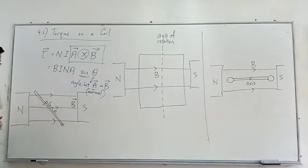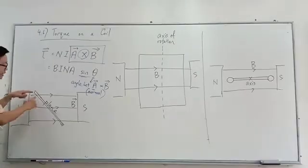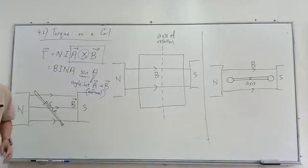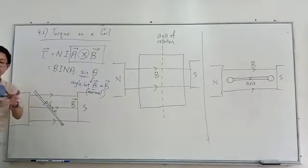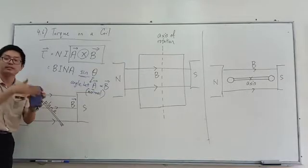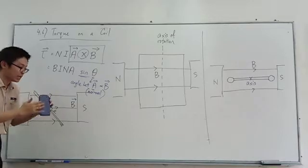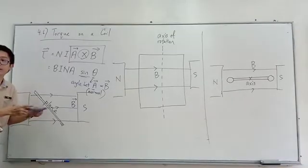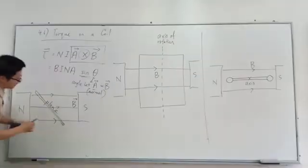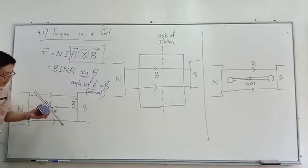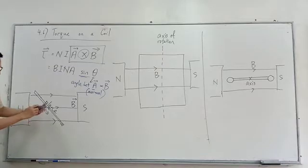What does it mean by normal? 90 degrees — 90 degrees to the plane. So let's say we have a coil like that under a magnetic field. Imagine this calculator as a rotating coil. This is the plane. If this coil is under the magnetic field, it will experience a torque, and this torque causes it to rotate. This is the axis of rotation.